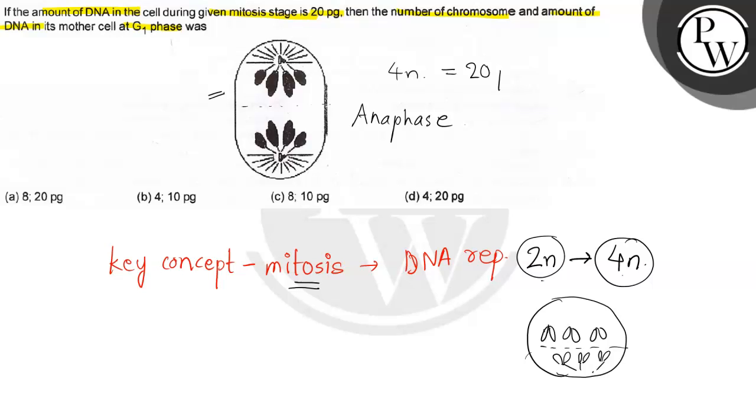So what will be the 2N? 10 picograms. Then the number of chromosomes and amount of DNA in the mother cell at G1 phase was - so what is the 2N? What is the mother cell?